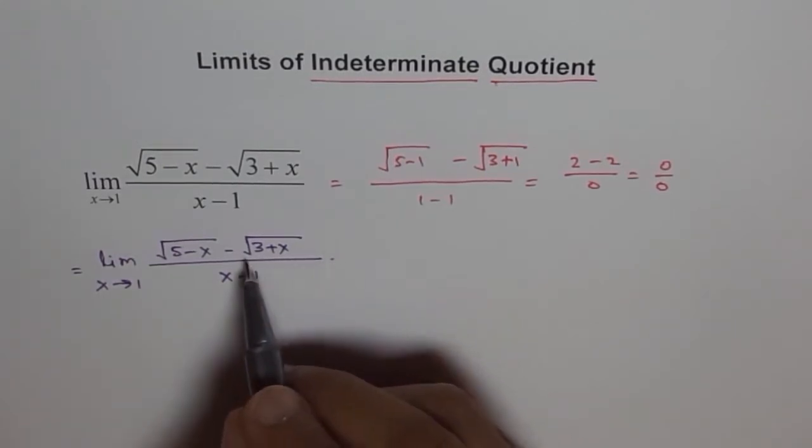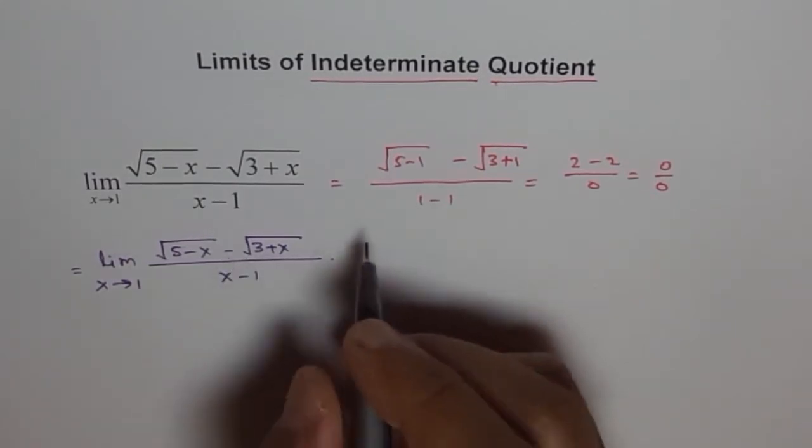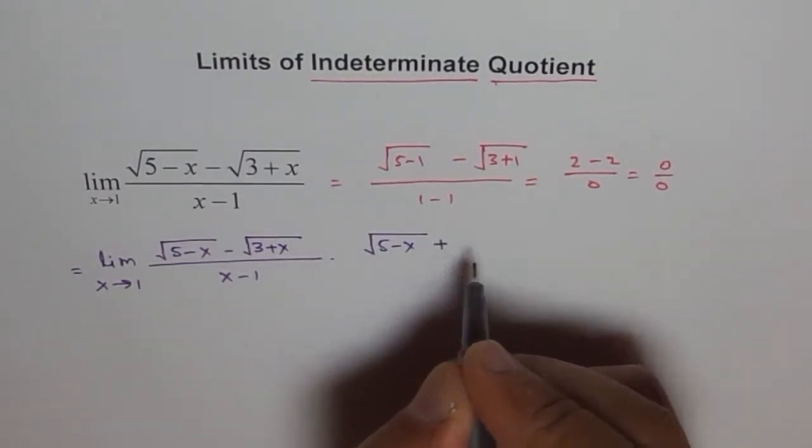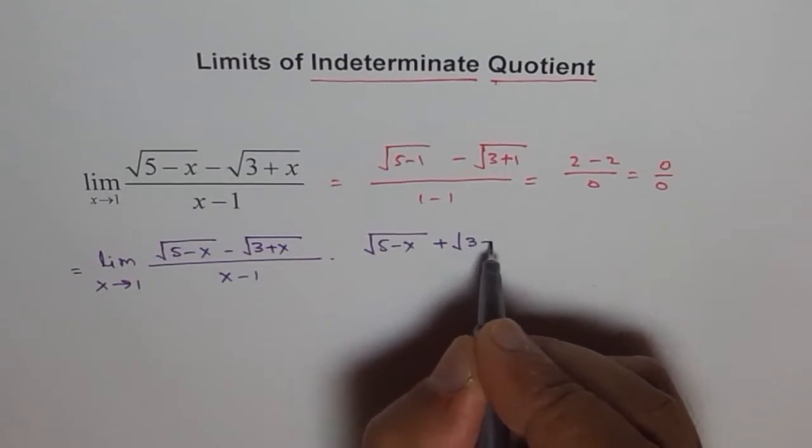Square root of 5 minus x minus square root of 3 plus x over x minus 1. So we have to multiply and divide by its conjugate, that means plus here. So we get square root of 5 minus x plus square root of 3 plus x.